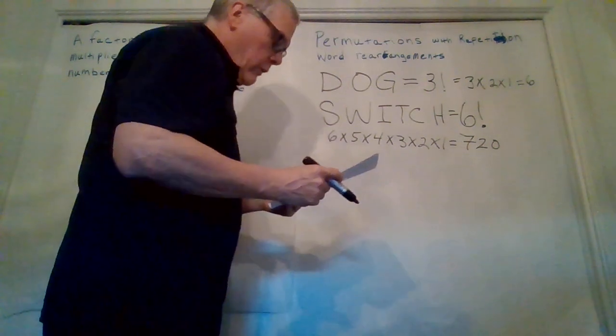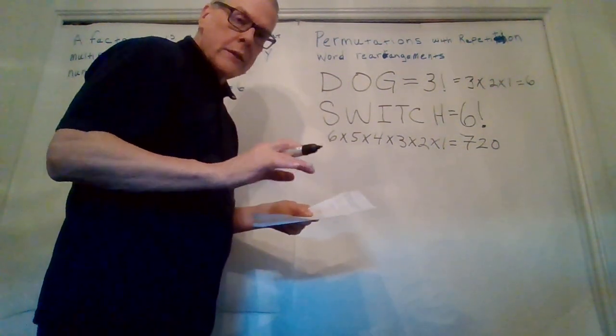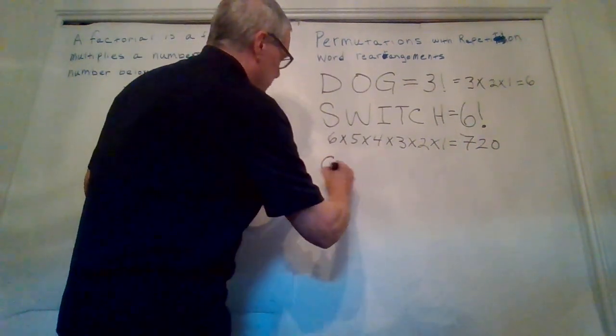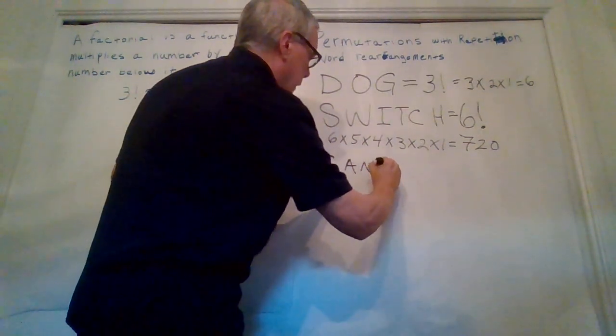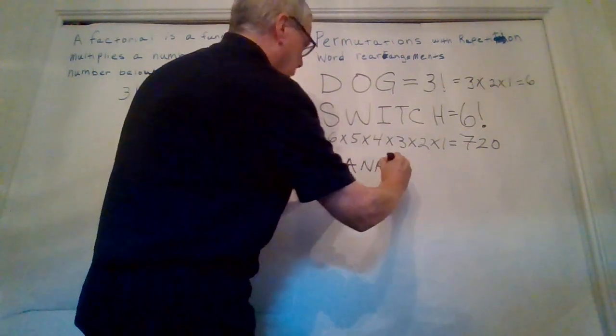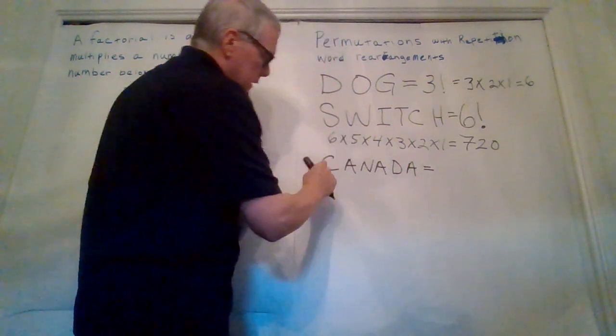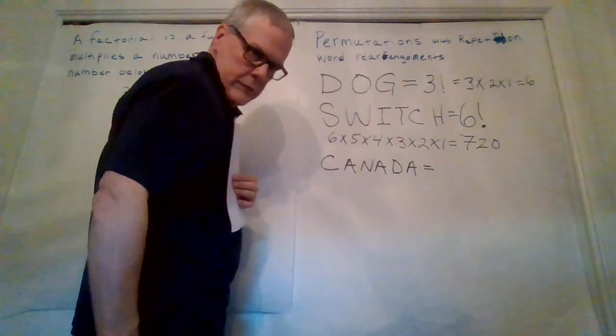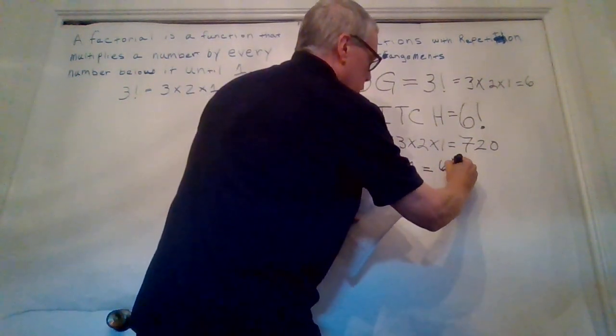So now when we repeat, when words have repeated letters in it, it's going to change up the formula a little bit. The next one we'll use is O Canada. C-A-N-A-D-A. So we see that there are 1, 2, 3, 4, 5, 6 letters in the word Canada. So there's our 6th factorial.